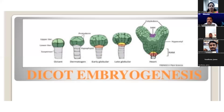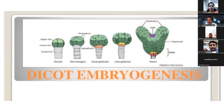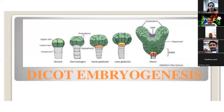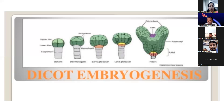The ovule is attached to the placenta by a small stalk called — chalaza, raphe, funiculus, or hilum? The ovule is attached to the placenta by a small stalk called the funiculus. In types of ovules: orthotropous ovule is always a straight ovule, and anatropous ovule is the inverted ovule. The megaspore mother cell (MMC) is always in the 2N or 2X state.